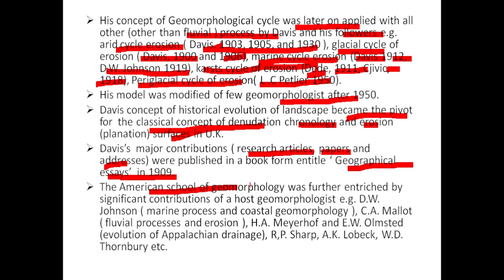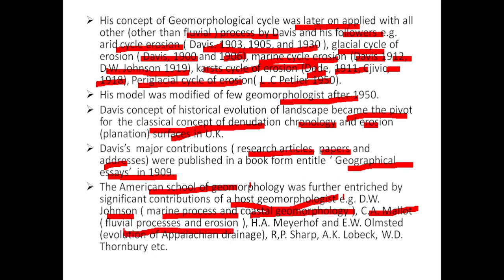The American school of geomorphology was further enriched by the significant contributions of a host of geomorphologists — for example, D.W. Johnson on marine processes and coastal geomorphology; C.M. Mallard on fluvial processes and erosion; H.M.A. Merritt and E.W. Olmsted on the evolution of Appalachian drainage; and R.A. Loweck and D.W. Thornbury.